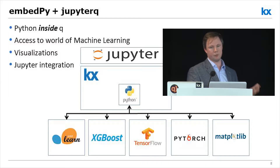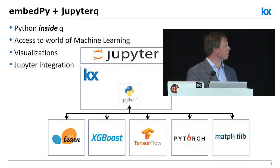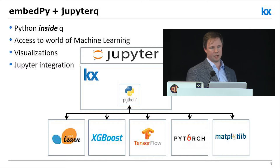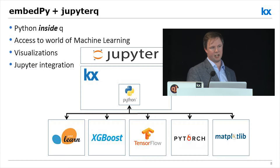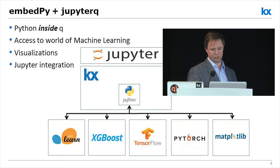The final thing we did was JupyterQ, which is our Q kernel for the Jupyter project. The most important and most famous part of the Jupyter project is our ability to create Jupyter notebooks — we can combine Q code with markdown text and inlined charts and results, and build up our workflow in the way that data scientists are used to working outside of the Q universe.